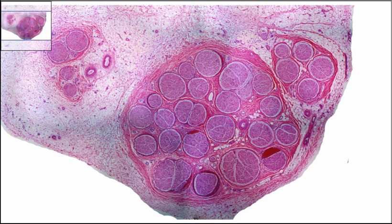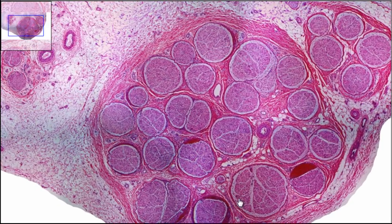What we're looking for are the different structures and features that make up a nerve. The first thing to look at is this nice large nerve bundle right here. If you look around the outside of the nerve bundle, you can kind of see this pink line that's running around the outside. If you zoom in a little bit, you can get a little better picture.